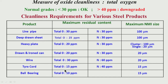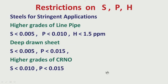For the two applications with the most stringent requirements — tire cord and ball bearing — look at the total oxygen requirements: ball bearing steel requires 10 ppm total oxygen and 15 microns maximum NMI size. For line pipe steel, sulfur and phosphorus must be very low: less than 0.005% sulfur, less than 0.010% phosphorus, hydrogen less than 1.5 ppm. Similarly, deep drawn grade and higher grades of CRNO steel have stringent requirements on sulfur and phosphorus.